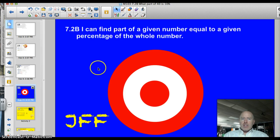Alright, tonight officially the target is 7.2b. I can find part of a given number equal to a given percentage of the whole number. Well, that sounds complicated, but we need to find the part tonight. We've had the percentage, we've had the whole. We always got 100, that'll always be there. We'll find the part tonight and I'll show you how to do that.